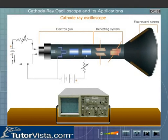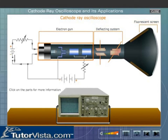The central component in the cathode ray oscilloscope is the cathode ray tube. The three main parts of the cathode ray tube are the electron gun, the deflecting system, and the fluorescent screen.